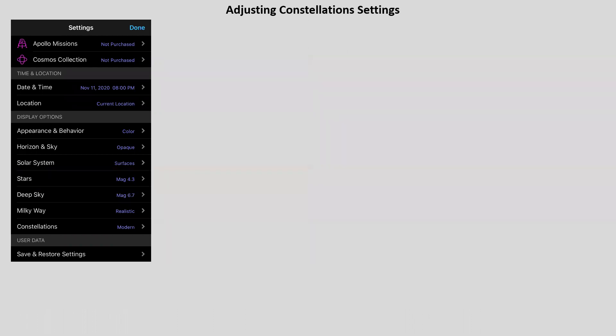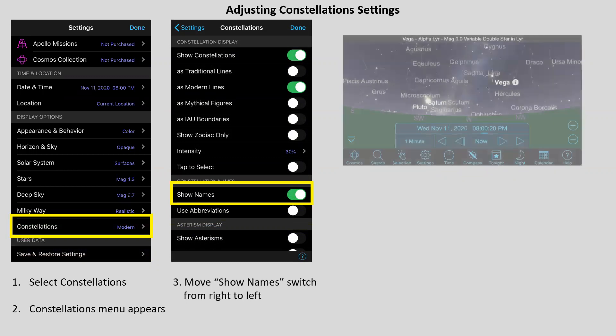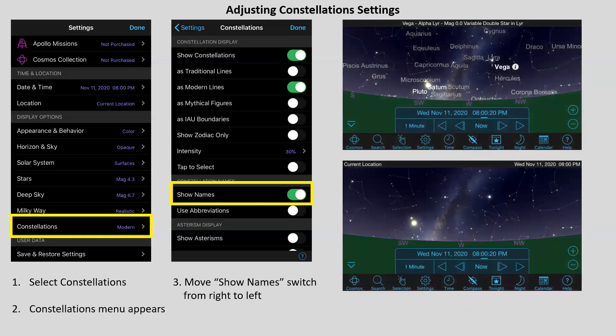Star names will disappear. Now I can do the same thing with constellations. I select constellations. A constellation menu appears, and I'd slide that from the right to the left. In this case, it's still on. And once I move from the right to the left, the constellation names will disappear. You've probably figured out that in all of these settings, it brings up another menu, and you just go through a series of menus and select what you want. None of this is difficult. And once you play with it a little bit, you'll probably figure it out.